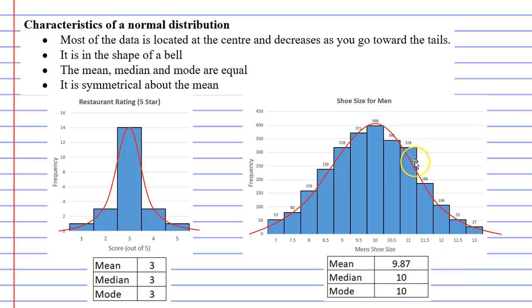And then, as we went to the right towards our tails, or to the left towards our tails, we noticed that it decreased. It seemed to taper off at either end. The next dot point is that it's in the shape of a bell. We noticed that when data is normally distributed, it makes a bell shape.